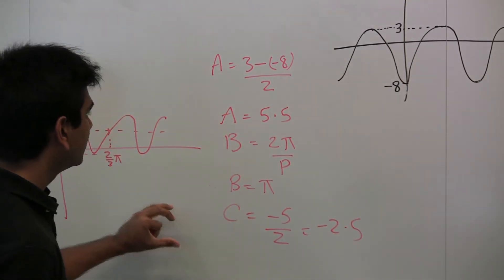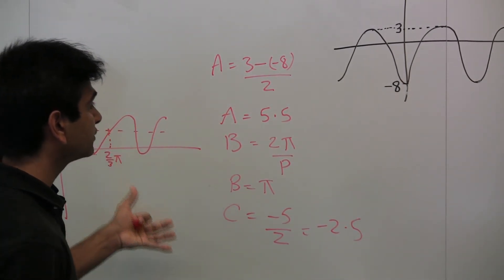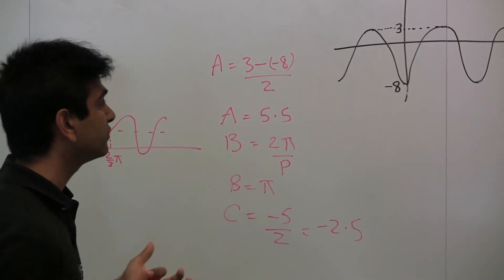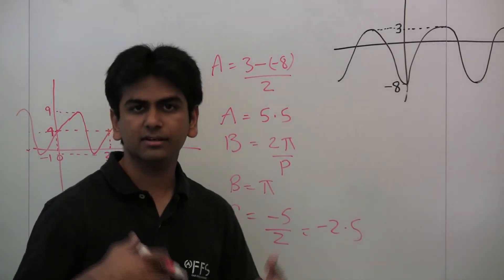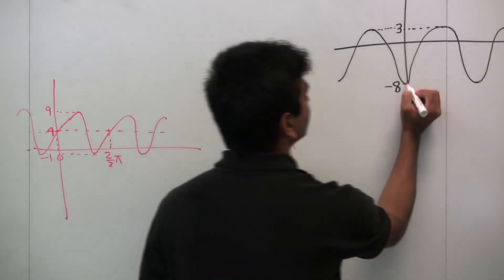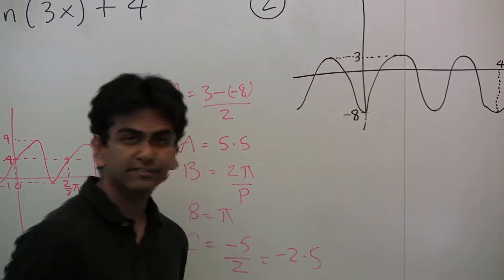Now looking at this, we pretty much have all the tools to write out the graph. All we have to look for is whether it's a positive sine, negative sine, etc. And since it starts at the min, it's a negative cosine.